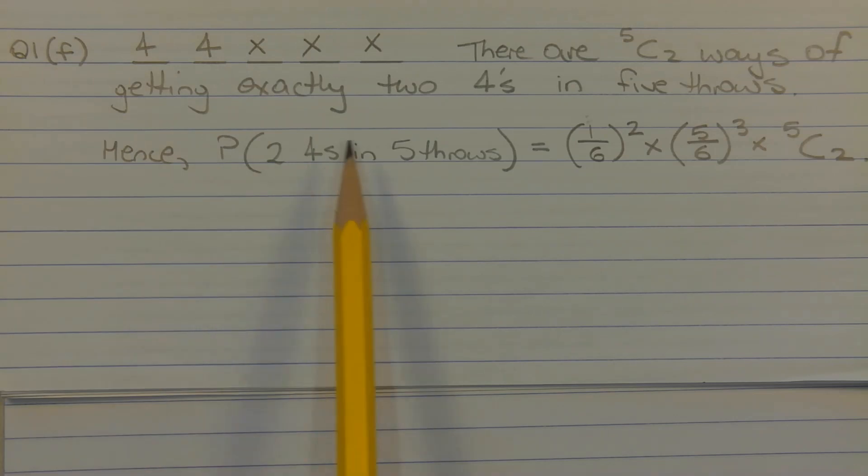Consider the following dash diagram. The five dashes represent the five rolls of a standard six-sided die. The probability of rolling a four on a standard six-sided die is one over six. By the law of complements, the probability of not rolling a four on a standard six-sided die is given by one minus one over six, which is five over six.